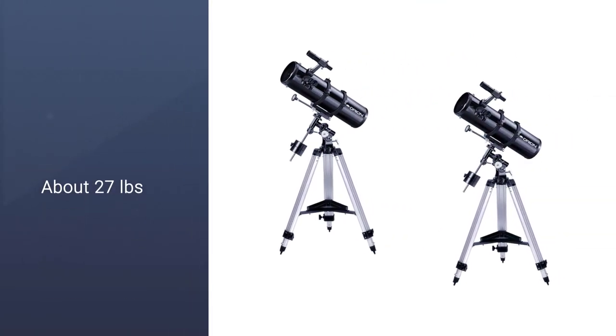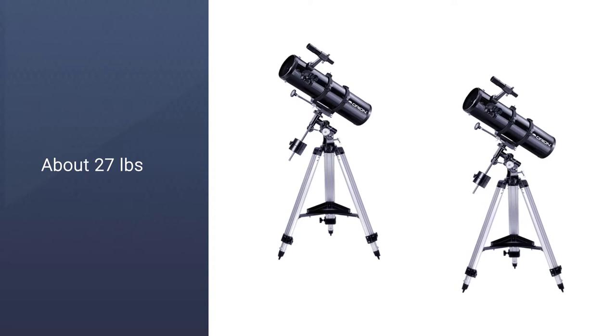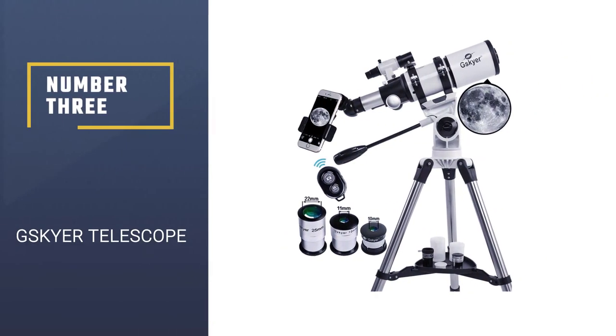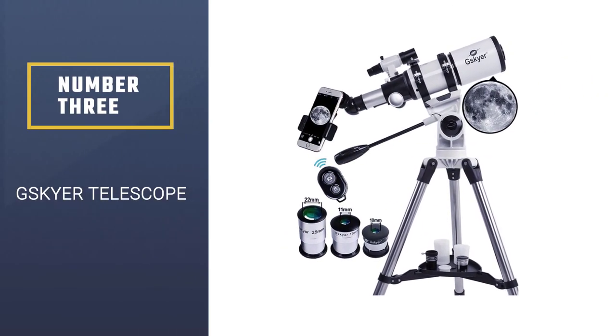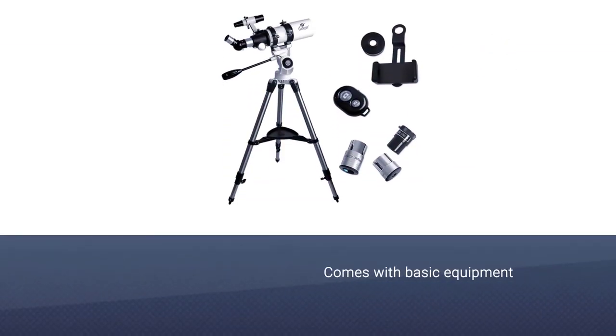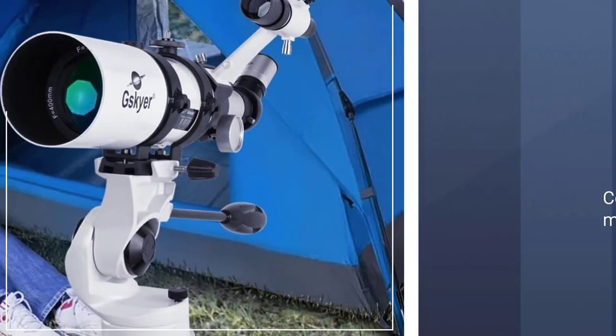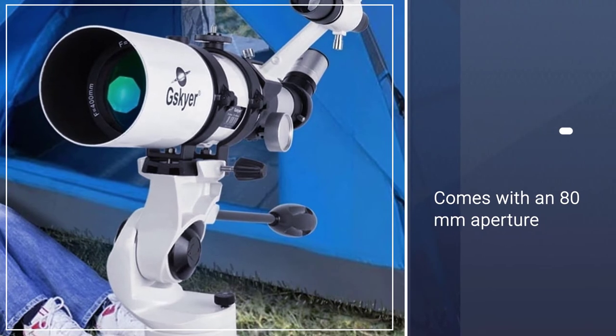Number three: G Skier Telescope. If you want the best telescope for viewing galaxies and planets, this product from G Skier is the right one. It's designed to view near space objects at night and comes with basic equipment.